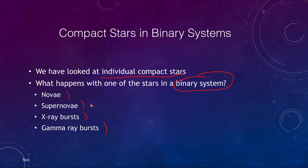The supernovae we get here are different from the Type 2 that we looked at previously. The Type 2 was a massive star at the end of its life. In this case, we're going to see a different type of supernova. So let's look at each of these in turn.